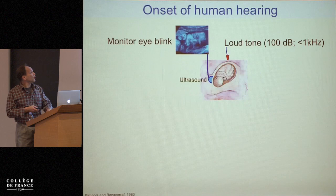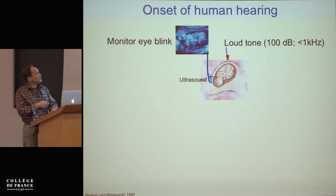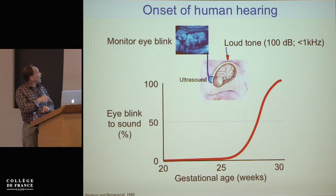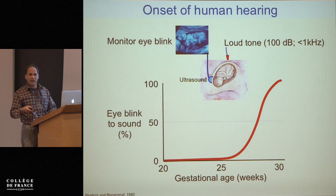Human beings first begin to hear as fetuses in utero. We know this by presenting sounds directly and monitoring an eye-blink reflex. Eye-blink reflexes to sound reach about 100% somewhere between 25 and 30 weeks of gestation. So we begin to hear in utero, but it's over the course of the next decade that we really attain adult perceptual skills.